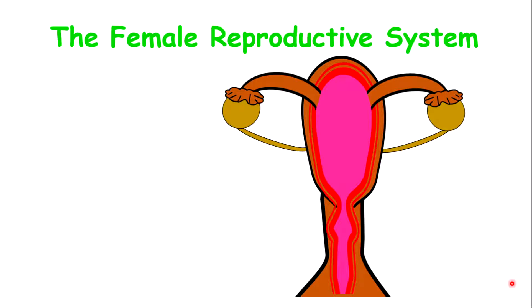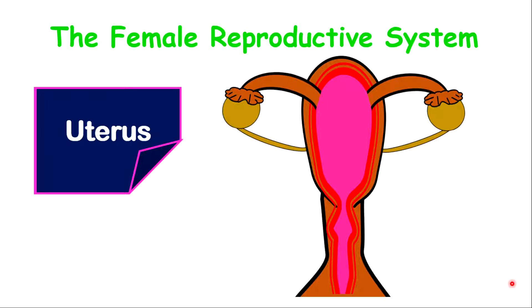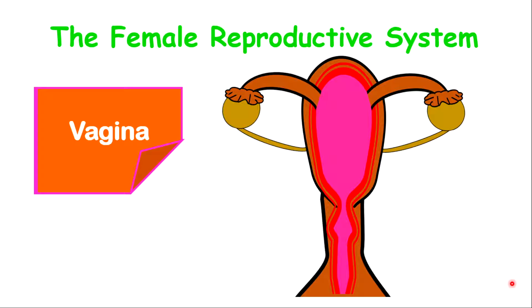Today, we're going to focus on some general structures relating to the female reproductive system. These structures include the ovary, the oviduct, the uterus, the cervix, and the vagina.